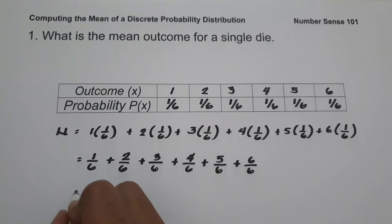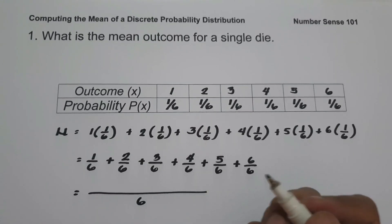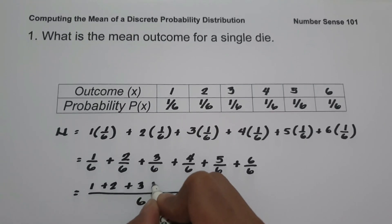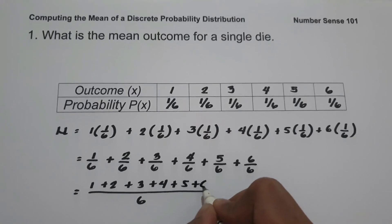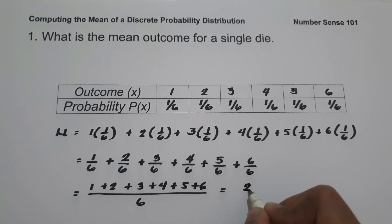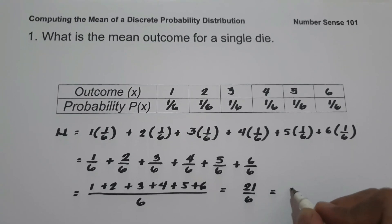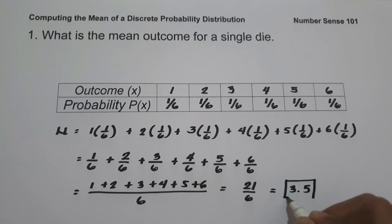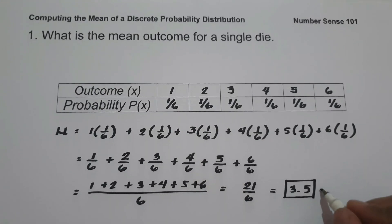To simplify, since we have the same denominator, we place 6 on the denominator and add 1 + 2 + 3 + 4 + 5 + 6, which equals 21 over 6. 21 divided by 6 is 3.5. So that means the average number of spots that would appear is 3.5, and this will be our answer.